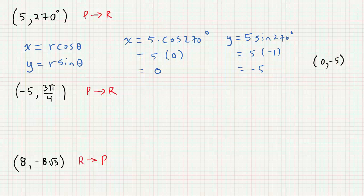Similarly, for the next one, we just have to plug and chug. So x is equal to r, which is negative 5, times cosine of 3 pi over 4.